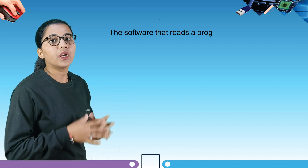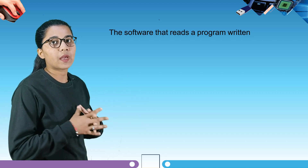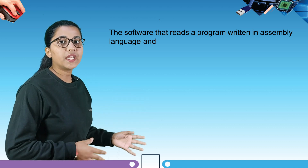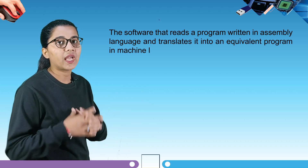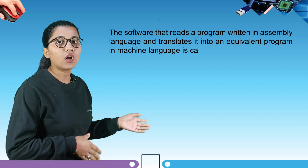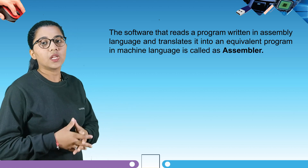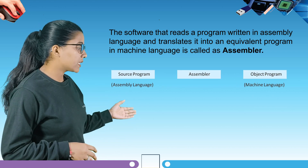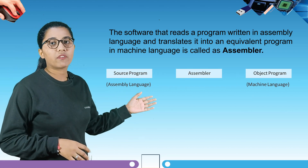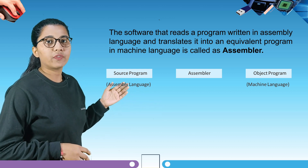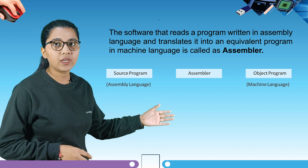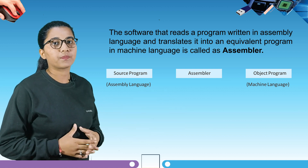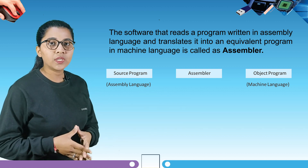The software that reads a program written in assembly language and translates it into an equivalent machine language program is called an assembler. Here you can see the process of assembly language: first we have the source program, then the assembler, then the object program.